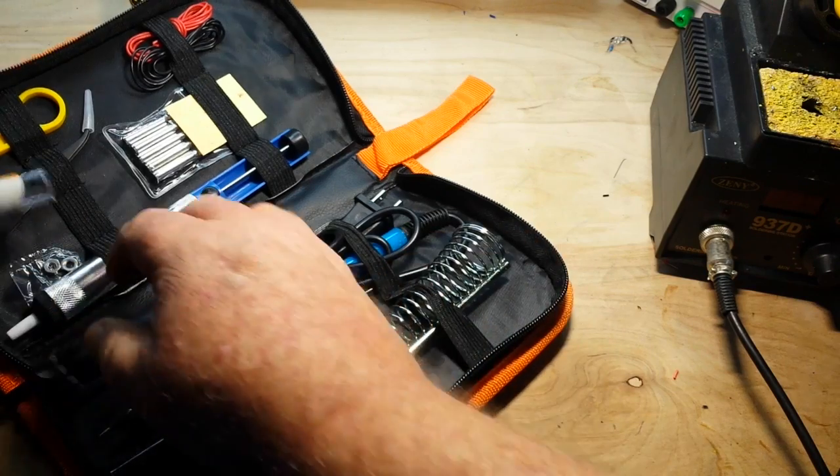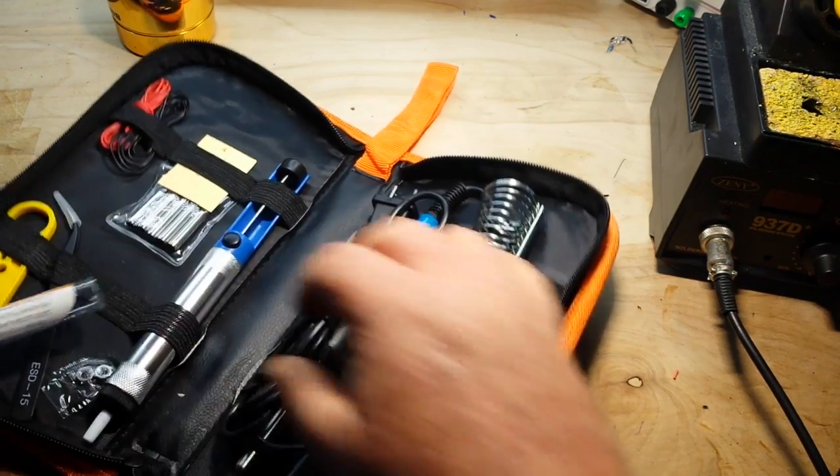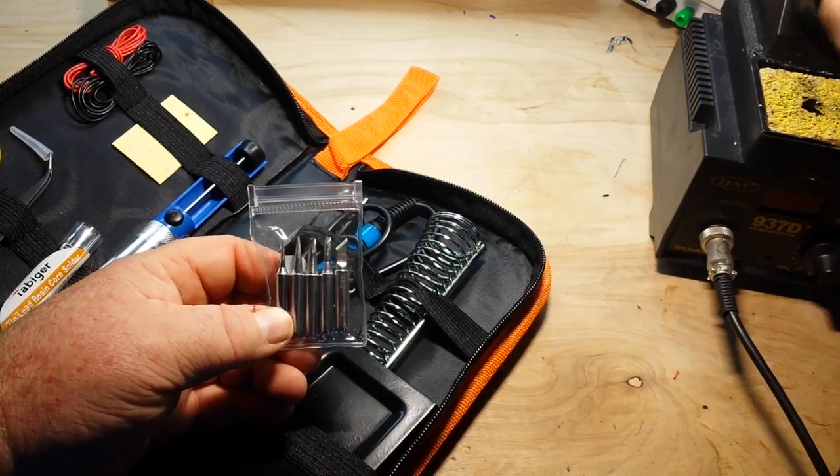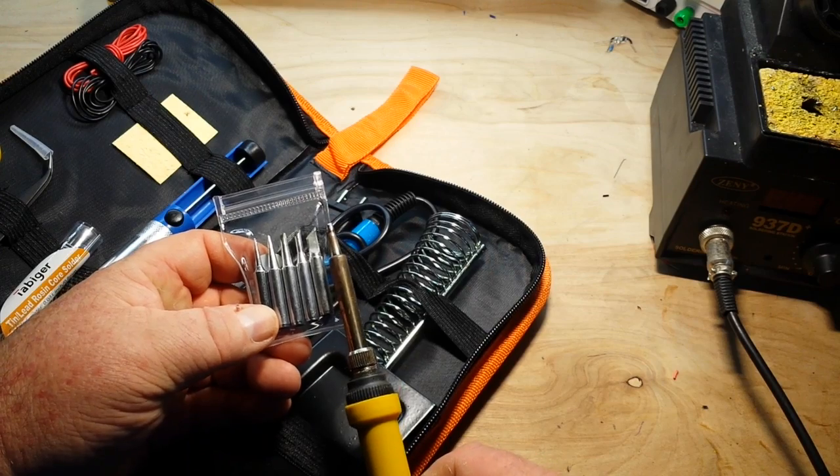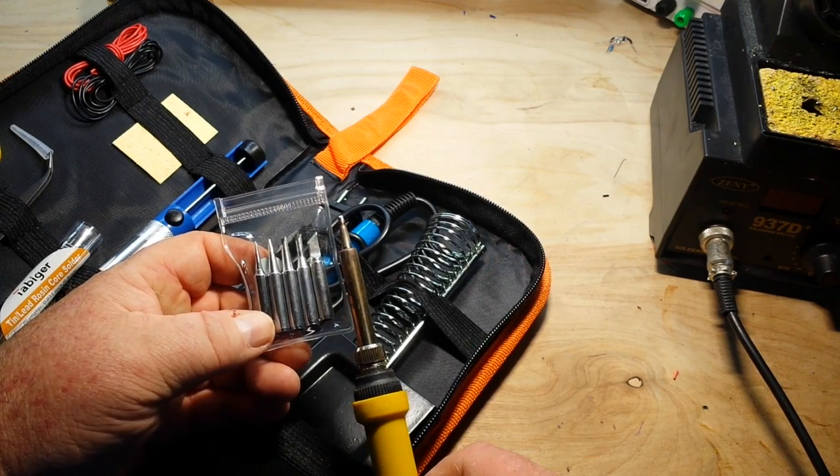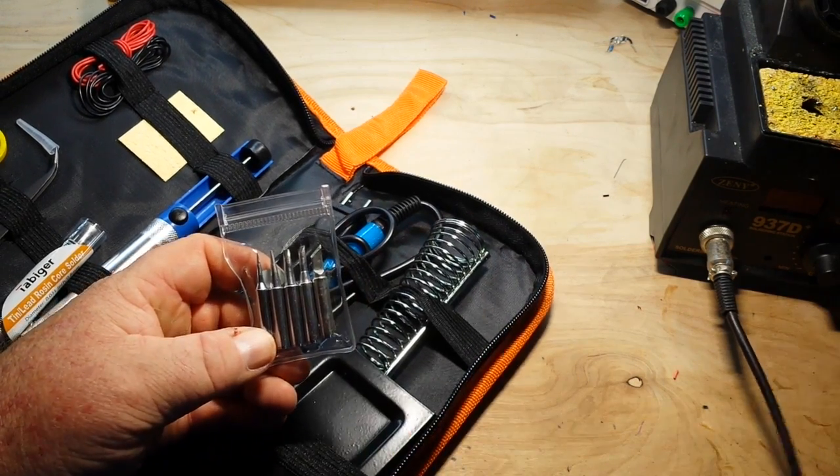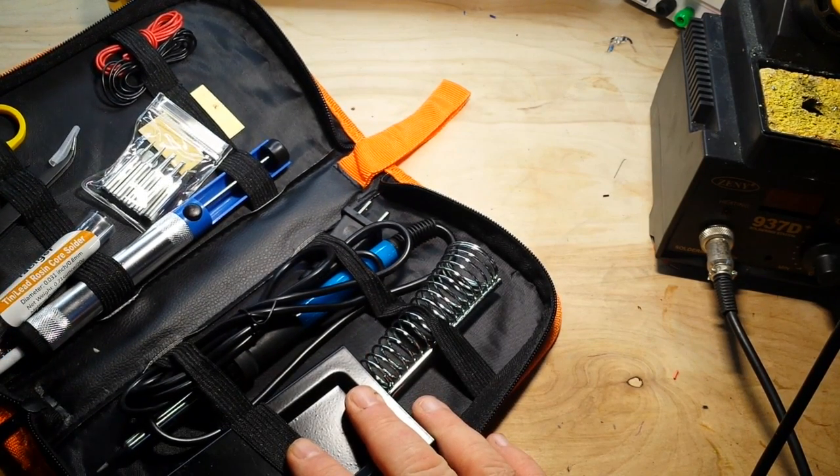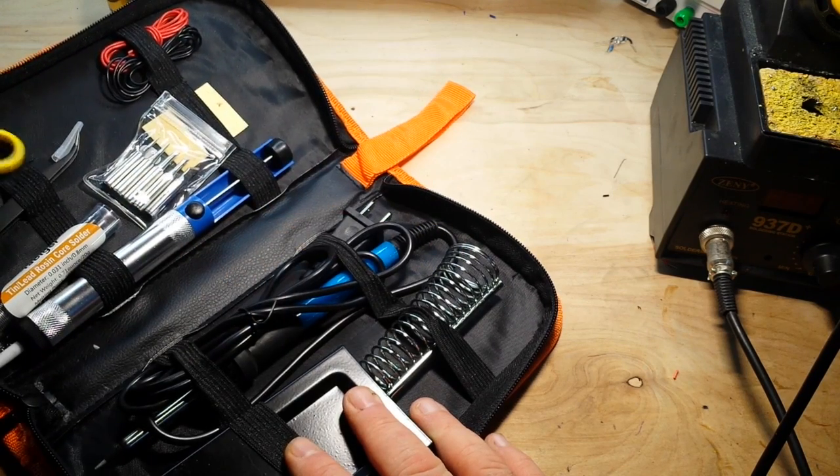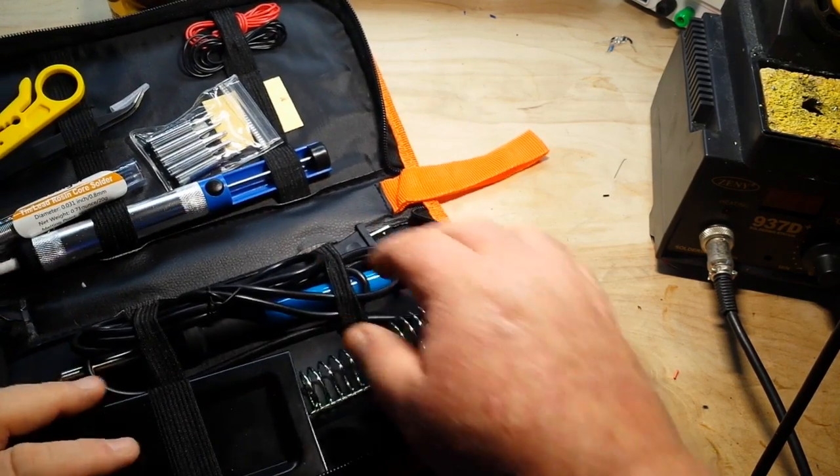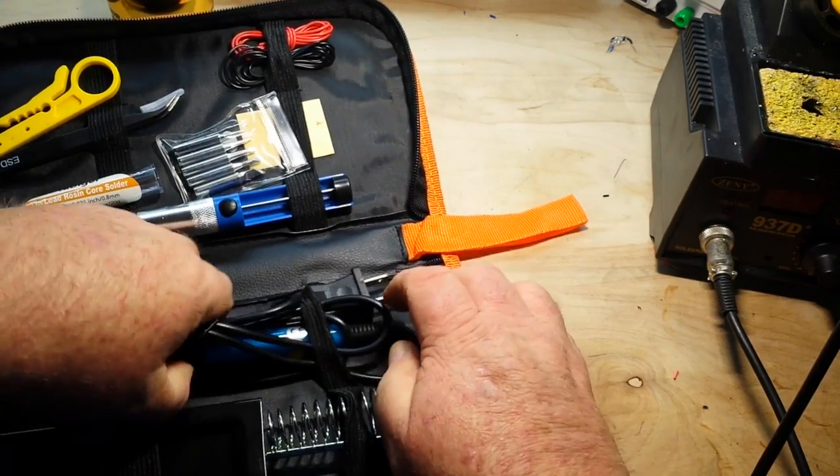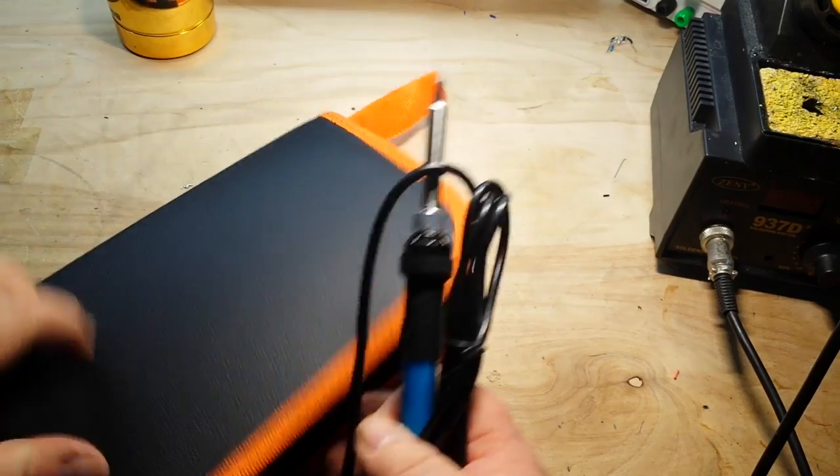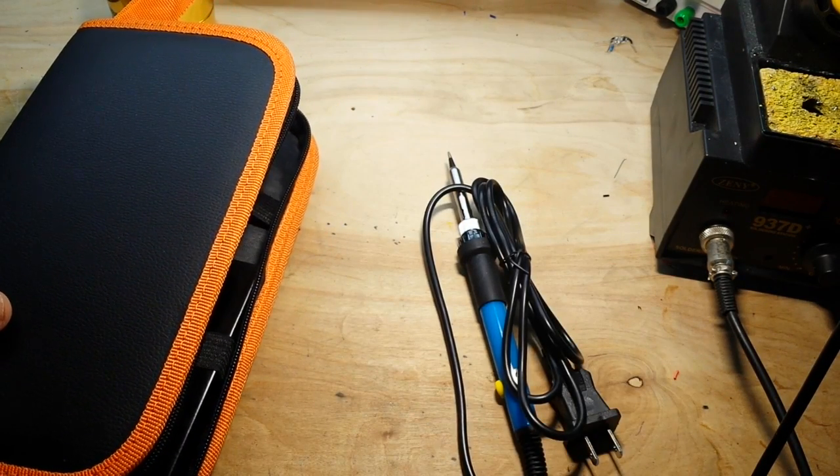We've got some tips, and if I'm not mistaken, those are the same tips that go with this iron. I like it already. Desoldering pump, some sort of wire stripper. We're here to talk about the soldering iron itself, which is what I want to throw in my bag.